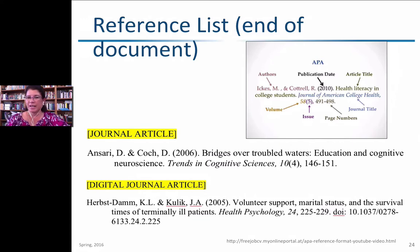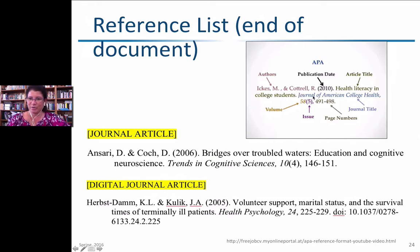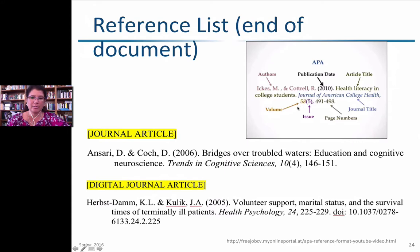For journal articles — digital or physical — you list the authors, the publication date, the article title (not in italics, only first word capitalized), followed by the journal name in italics with important words capitalized, a comma, the volume number, the issue number, another comma, and the page numbers.